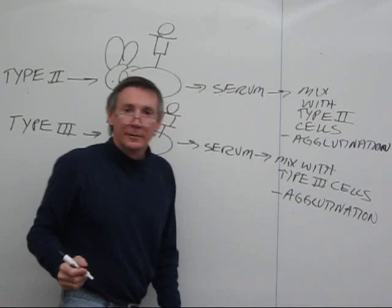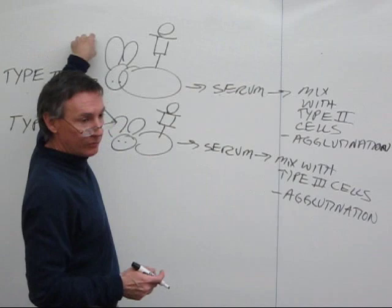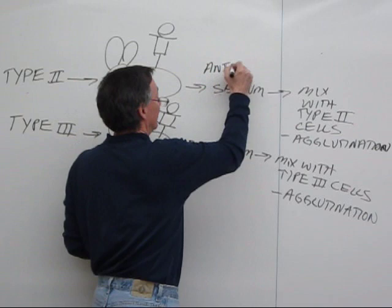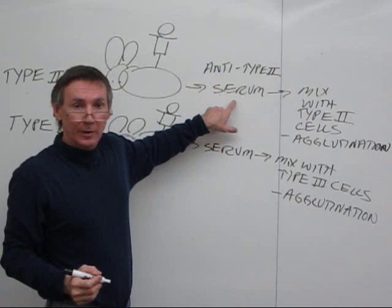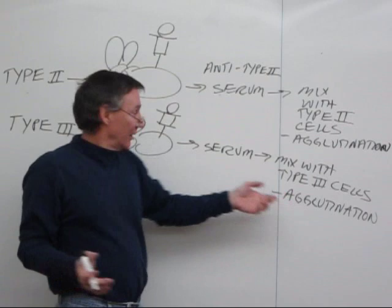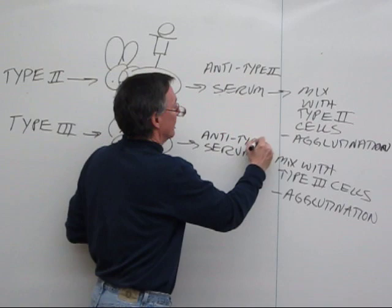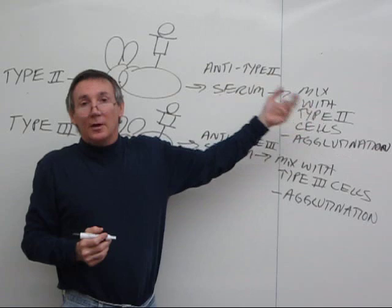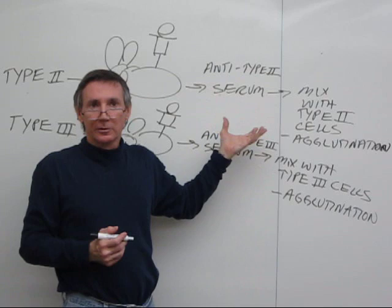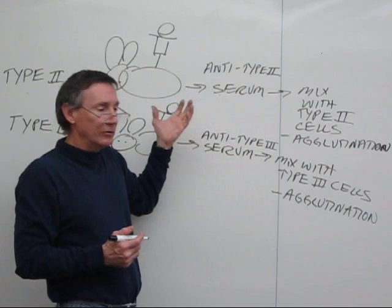Now, here's the deal. If you take serum from the rabbit that was inoculated with type 2 cells, which we might call anti-type 2 serum, and mix it with type 3 cells, you don't get any agglutination. If you take the serum that was raised against type 3 and mix that with type 2 cells, you don't get agglutination. The antibodies in the serum from the rabbit are specific to the particular type of cells, the particular strain of streptococcus.